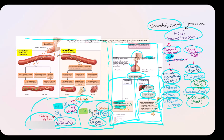Regarding glucose: human growth hormone leads to an increase in blood glucose concentration. In turn, IGF will take that glucose and stimulate cells such as muscle and bone to take up that glucose.